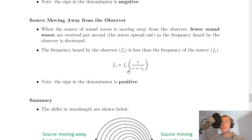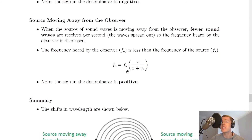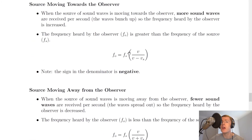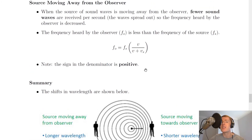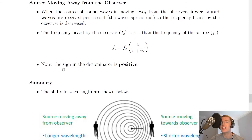Going back to the notes: the frequency heard by the observer FO is less than the frequency of the source FS. The equation for this case is FO = FS × V / (V + VS). Notice this is almost exactly the same as the previous equation — the only difference is the sign in the denominator, which is positive here. We need to be aware of the two cases and the fact that they have slightly different equations.